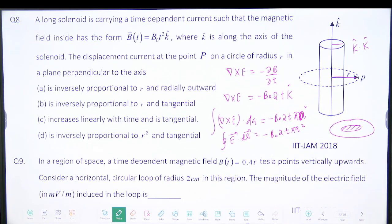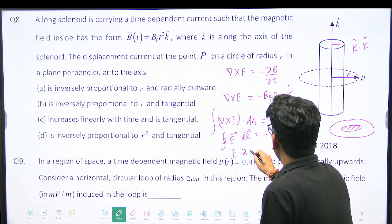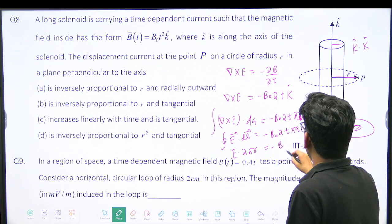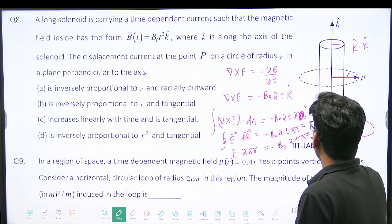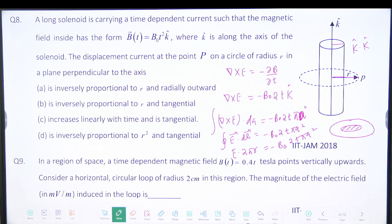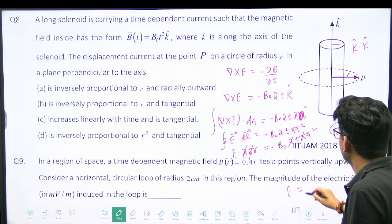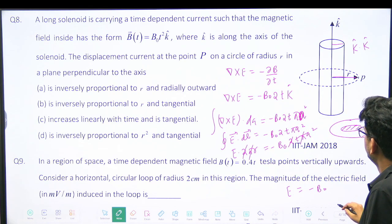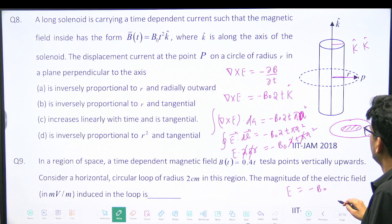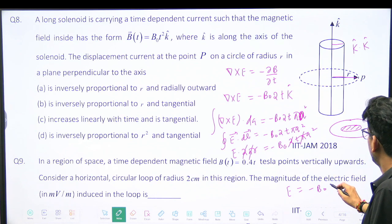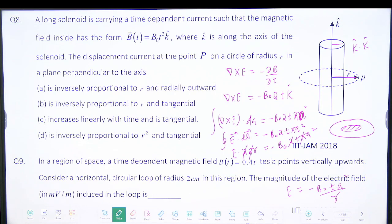Now what will be E dot DL? E into 2 pi R. So E into 2 pi R will be minus B₀ 2T into pi A squared. So the electric field will be how much? Minus A squared divided by R.